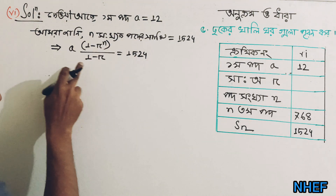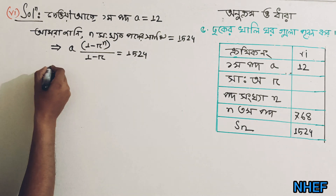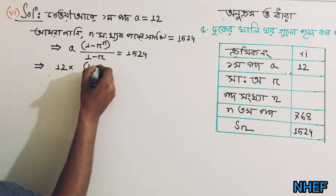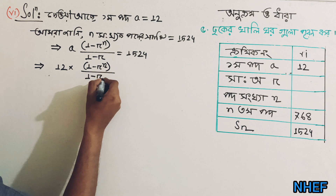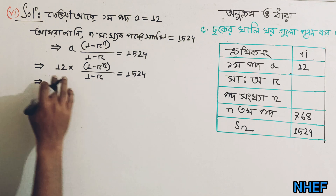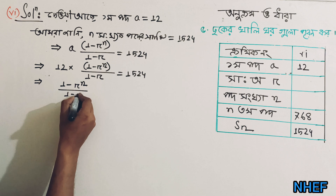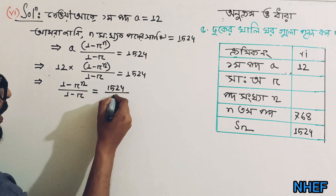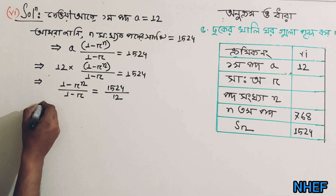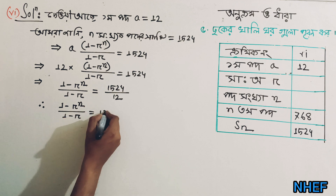So, n minus r to the power n, divided by 1 minus r, is equal to 1524. And n minus r to the power n, divided by 1 minus r, is equal to 1524 divided by 12.